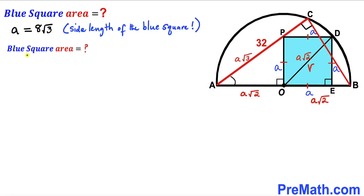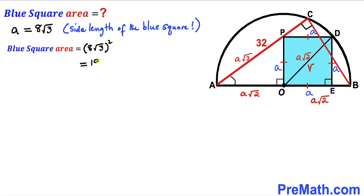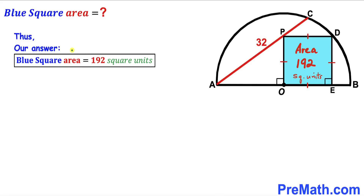Here's our final step: calculating the area of the blue square. Using the area formula — Area = S², where S is the side length — and our side length is 8√3. So the blue square area = (8√3)² = 192 square units. Therefore, the blue square area turns out to be 192 square units. Thanks for watching and please don't forget to subscribe to my channel for more exciting videos.